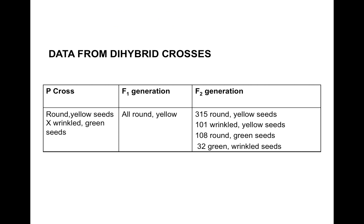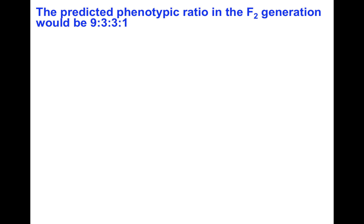The data from his dihybrid cross showed 315 round yellow seeds — the two dominant phenotypes — 101 wrinkled yellow seeds, 108 round and green seeds, and 32 green wrinkled seeds — both recessive phenotypes. If you transform that into a ratio, you would end up with the predicted 9 to 3 to 3 to 1 ratio.